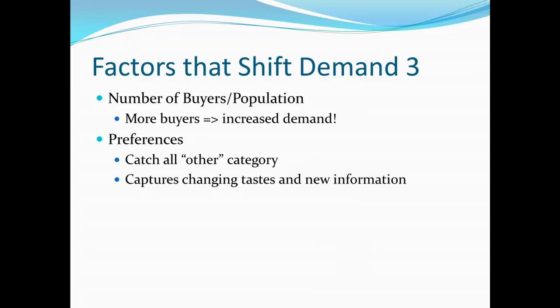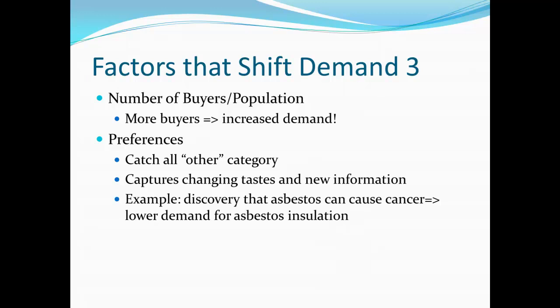Another thing that can fall under preferences is new information. For example, if we discover that asbestos can cause cancer, that would tend to lower demand for asbestos insulation, despite nothing else having changed — no change in buyers, no change in price of a related good. It's simply new information about the product itself that made us dislike it. Similarly, if we find great health benefits in something, we'd see a significant increase in demand. This is classified as a change in preferences.